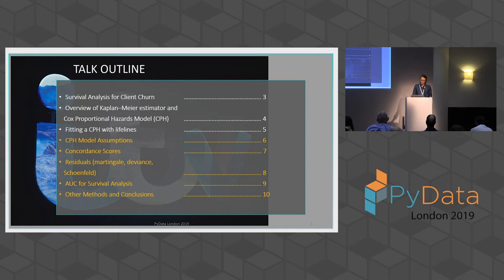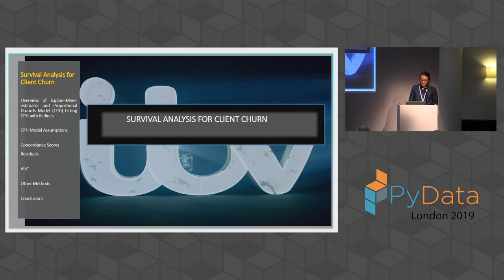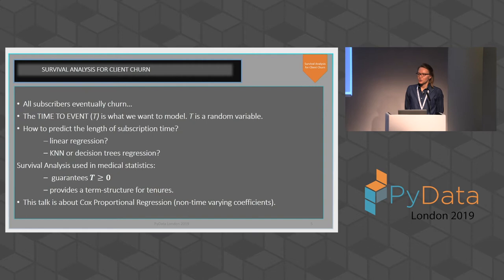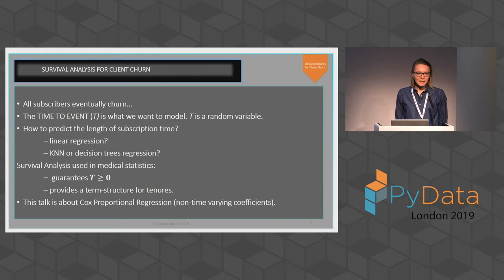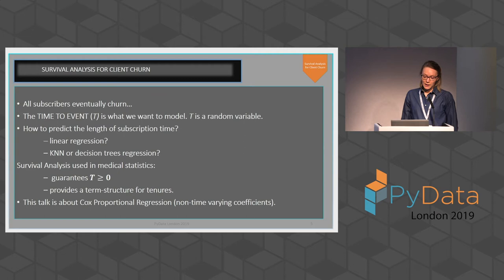So, survival analysis with client churn. All subscribers eventually churn, but it would be nice to know when they're going to do that, because if we know that, we could potentially postpone the time they're going to churn, which would be great for the business. So how to predict the length of subscription time? We could use linear regression, but it doesn't guarantee that the time will always be positive. We could use k-nearest neighbor or decision trees, but it doesn't give us any probabilistic term structure for subscription length. Survival analysis, used in medical statistics, guarantees that T is always positive, and it also provides the term structure.